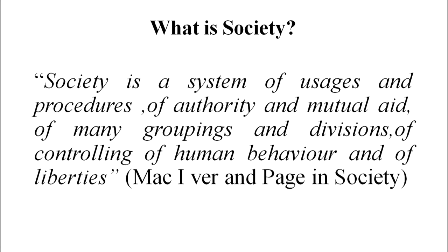What is a society? McIver and Page, in their book 'Society', gave a definition: society is a system of usages and procedures, of authority and mutual aid, of many groupings and divisions, of controlling of human behavior and of liberties. Society is a system where individuals have a relationship with the larger society, governed by norms and procedures, and where social behavior is controlled by certain institutions.